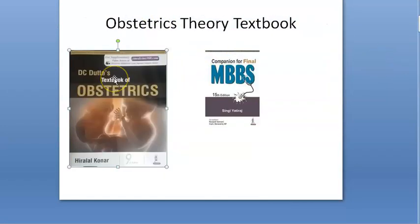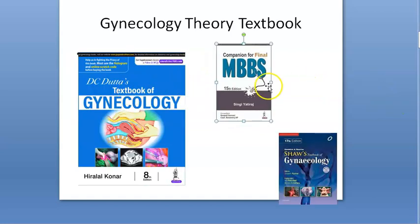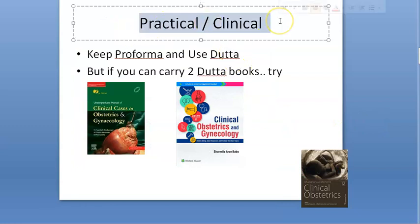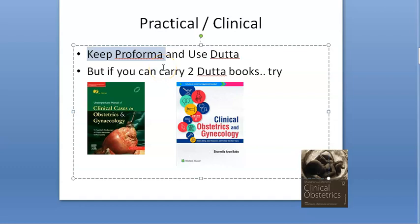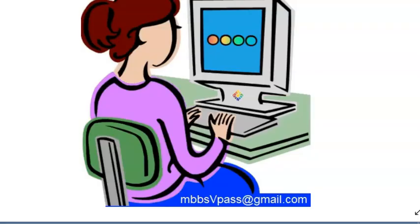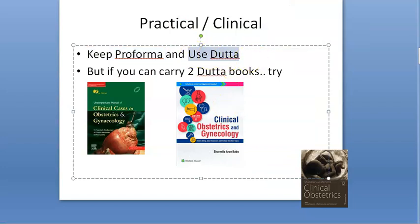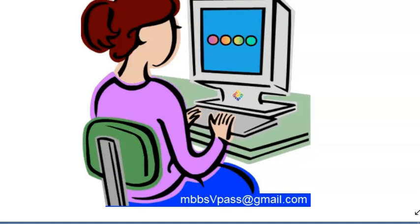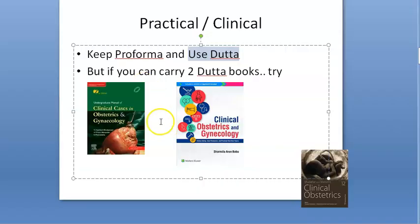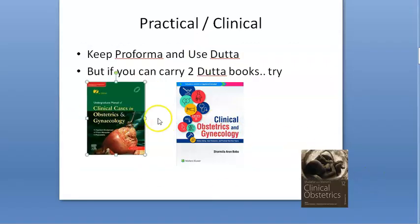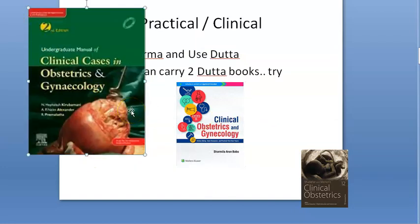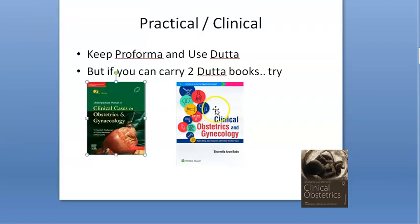For books, the suggested text is Datta for obstetrics, along with your university question bank so you know the priority questions. For gynecology, Datta again, and some people also refer to Shaw's Gynecology. For practical clinicals, keep the standard proformas for obstetric and gynecology history-taking. You can use your Datta textbook alongside, but since there are two separate books you won't know which case you'll get. If you want to carry one book, consider one of the clinical books available.